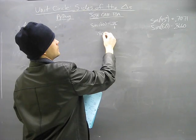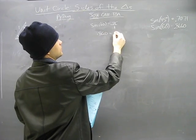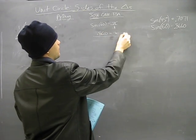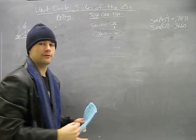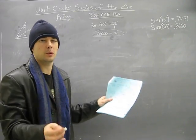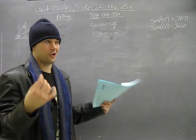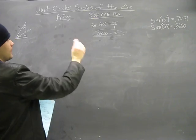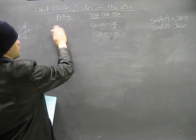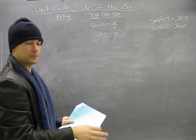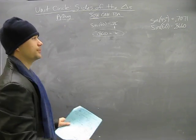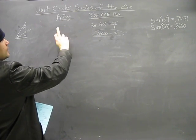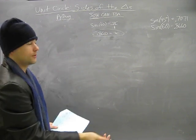So I've got 0.866 equals x over 1, or just x. Same as before, this is not precise — it's good, but not good enough. And if at all possible you don't have to use decimals, don't use them, please. So let's try the Pythagorean theorem.